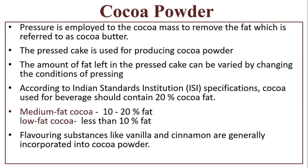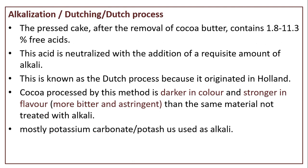Cocoa powder: pressure is applied to the cocoa mass to remove the fat, which is referred to as cocoa butter. The pressed cake is used for producing cocoa powder. The amount of fat left in the pressed cake can be varied by changing the conditions of pressing. According to ISI specifications: cocoa for beverages should contain 20% cocoa fat; medium fat cocoa, 10–20% fat; low fat cocoa, less than 10% fat. Flavoring substances like vanilla and cinnamon are generally incorporated into cocoa powder.